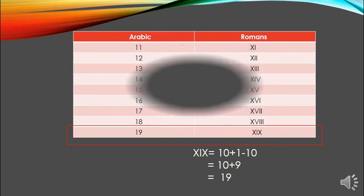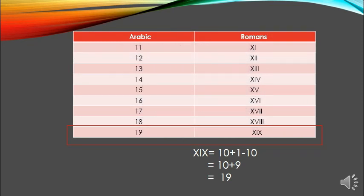19 represents XIX. X equals 10. Here we will apply rule number 1: subtract smaller from greater value. So I equals 1 and X equals 10, so 10 minus 1 equals 9, plus 10 equals 19. So 19 represents XIX.